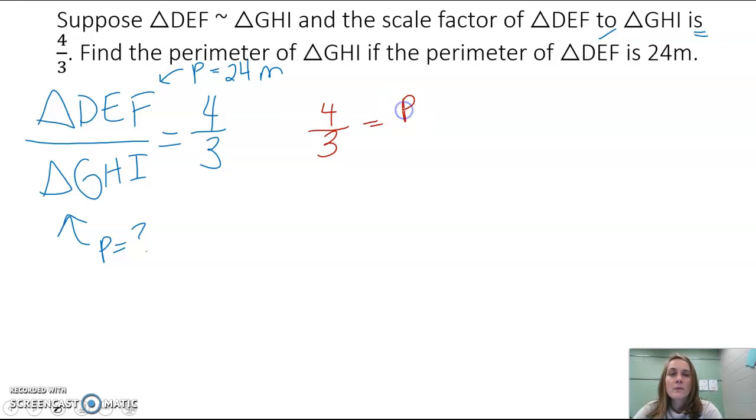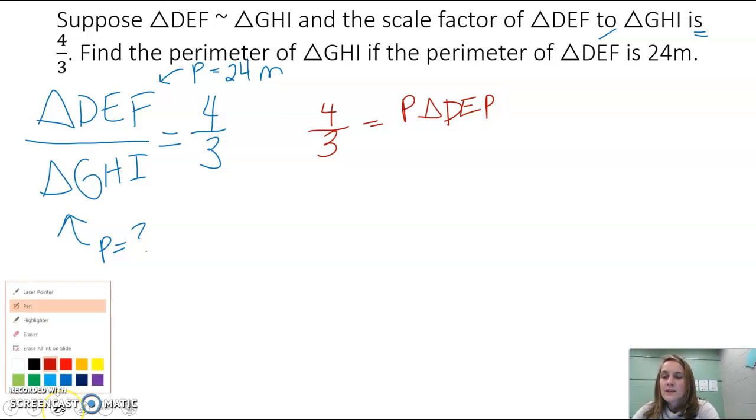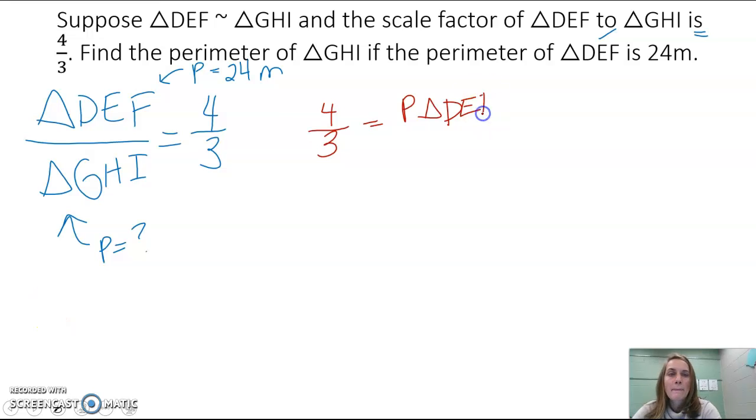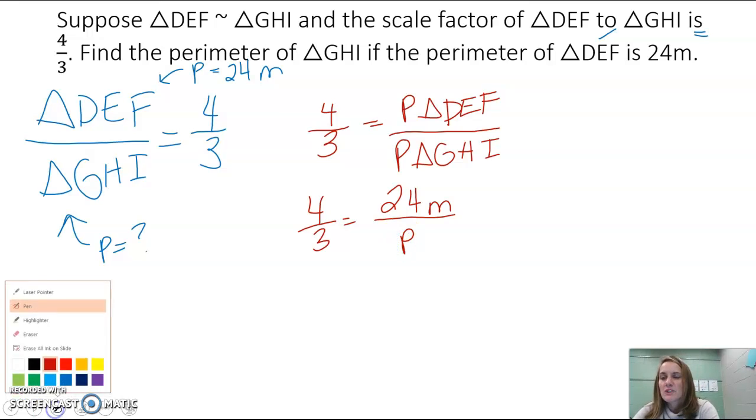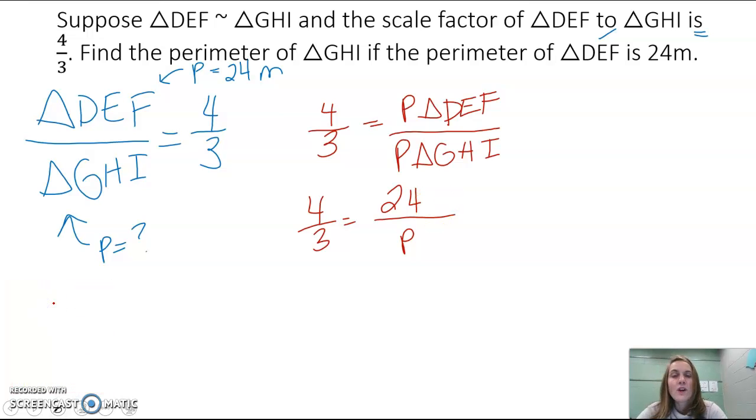We can set four-thirds equal to the perimeter of triangle DEF over the perimeter of triangle GHI. So four-thirds equals 24 meters over the perimeter of GHI. I'm going to put P for the unknown perimeter, and I'll remove the meter unit so it doesn't confuse with a variable.